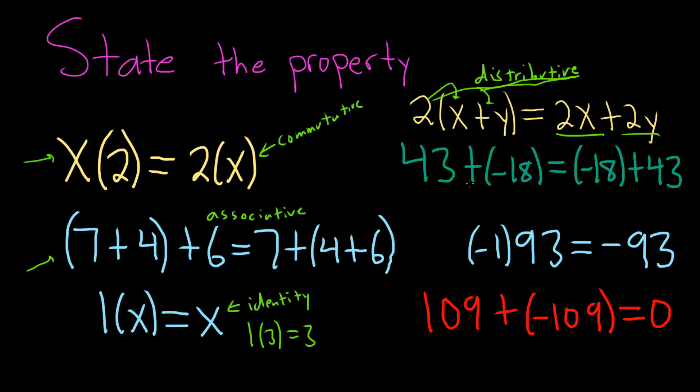This is a popular property. This is called the commutative property of addition. So if we have 43 plus negative 18, it's the same thing as negative 18 plus 43. We get the same result.